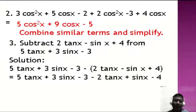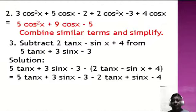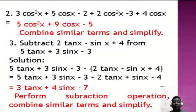Number three: subtract 2 tangent x minus sin x plus 4 from 5 tangent x plus 3 sin x minus 3. The minuend is 5 tangent x plus 3 sin x minus 3, and the subtrahend is 2 tangent x minus sin x plus 4. The result is 3 tangent x plus 4 sin x minus 7. We perform subtraction, combine similar terms, and simplify.